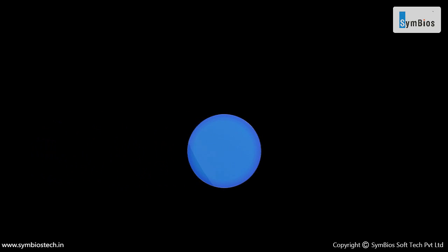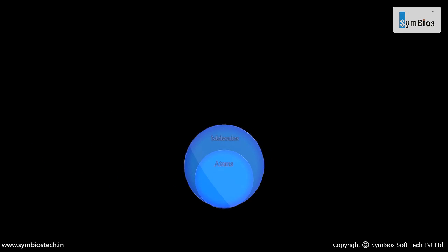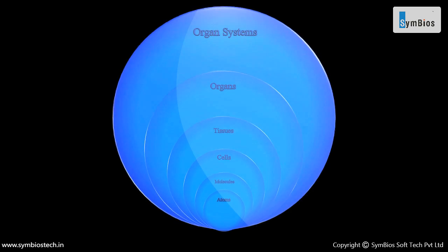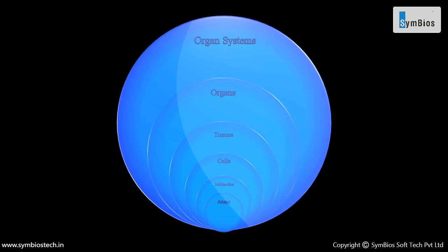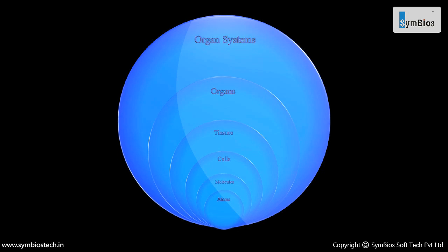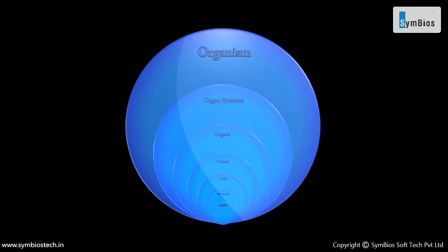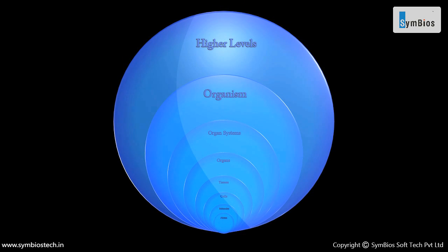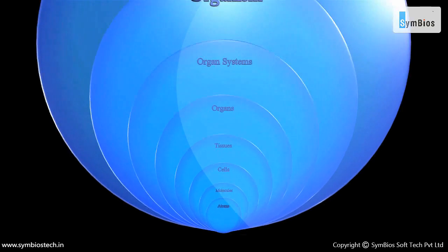The levels of organization — which include atoms, molecules, cells, tissues, organs, and organ systems — are the lower levels of organization. The levels above the organism level are the higher levels of organization. In this module, we will discuss the lower levels of organization.